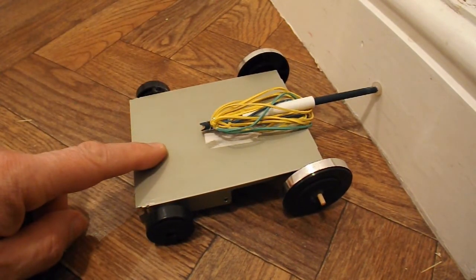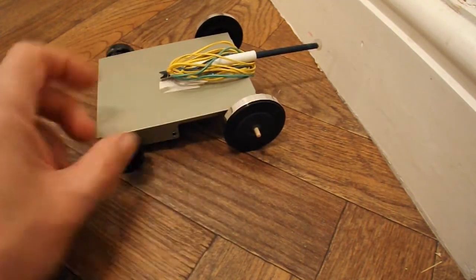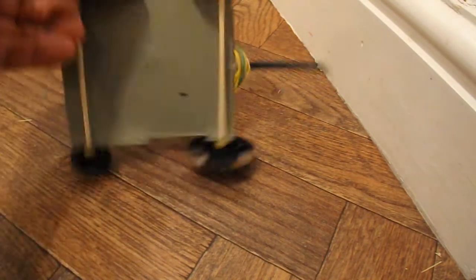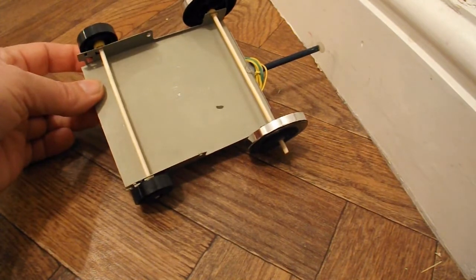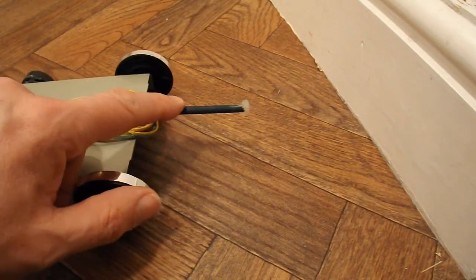Chassis made from an old floppy disk drive case. Wheels are made from the feet from a DVD player. Axles are barbecue skewers. Push rod is a flour cane.